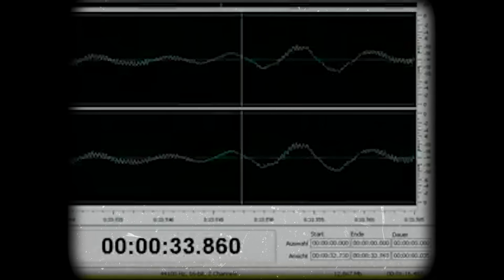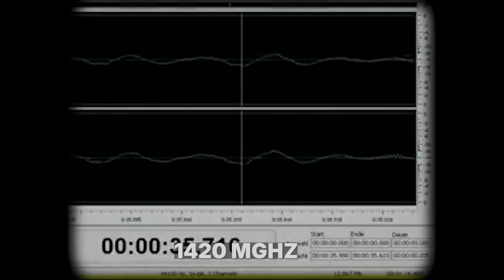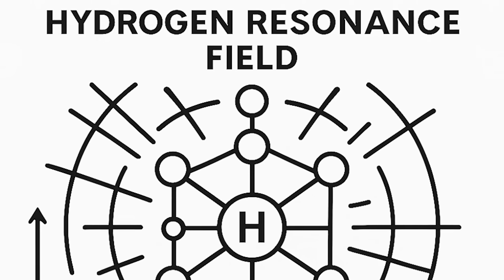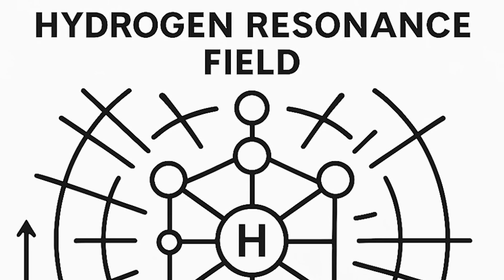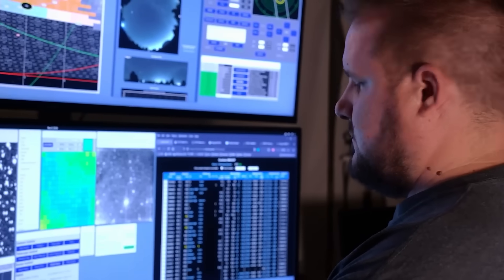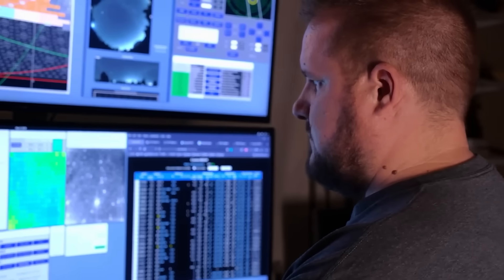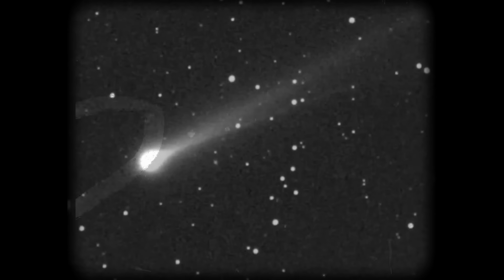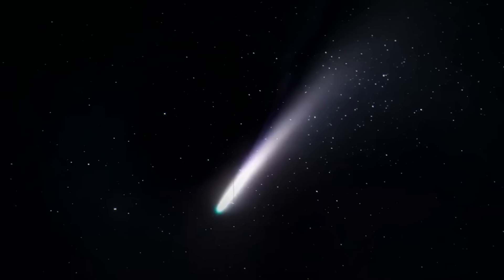The thing nobody tells you is just how perfect this signal was. It was transmitted at a frequency of 1420 megahertz, the same frequency at which hydrogen, the most common element in the universe, resonates. Scientists had long theorized that any intelligent civilization trying to communicate across the vastness of space would use this frequency as a kind of cosmic calling card. It's a protected channel, an interstellar quiet zone, where earthly transmissions are forbidden. And yet, there it was. A powerful, focused beam of energy coming from the direction of the Sagittarius constellation.